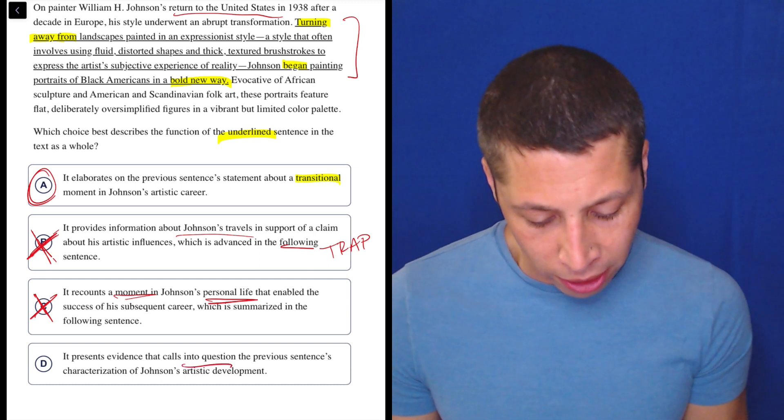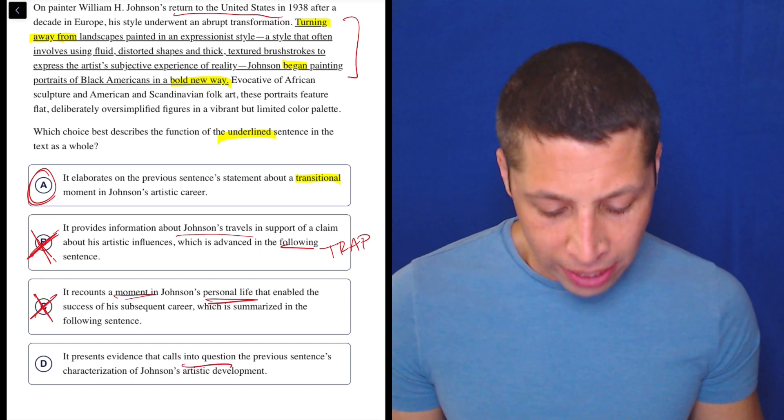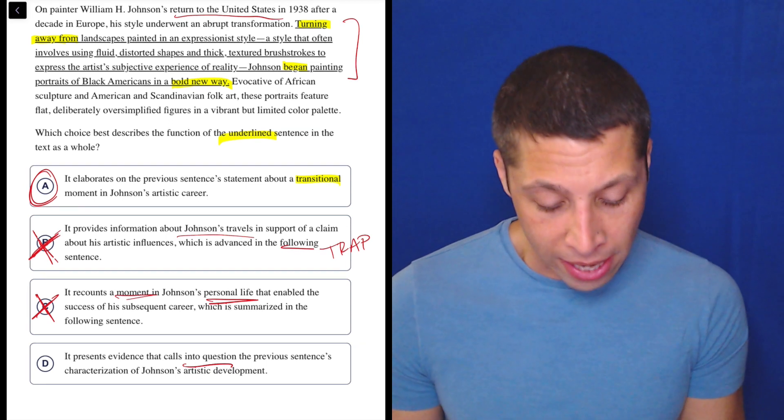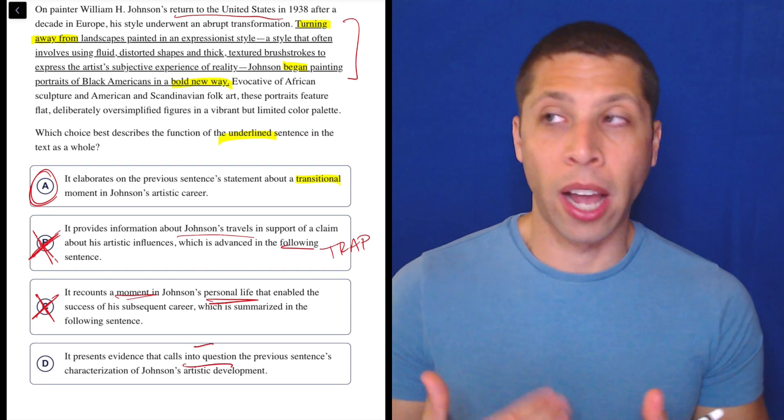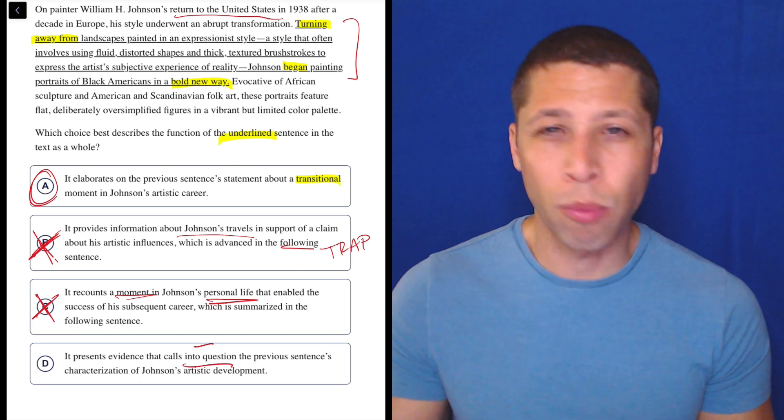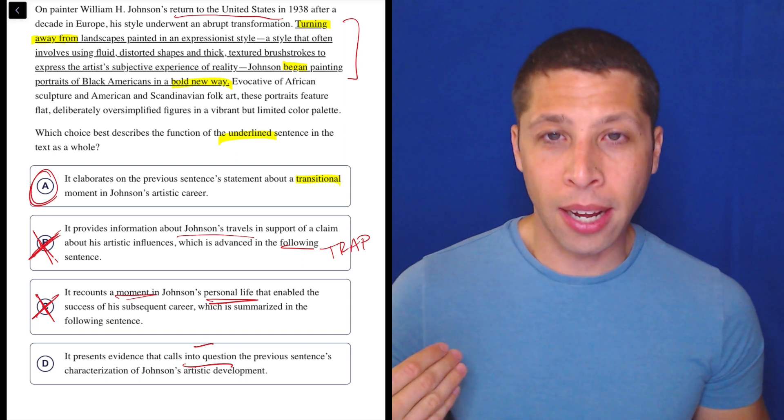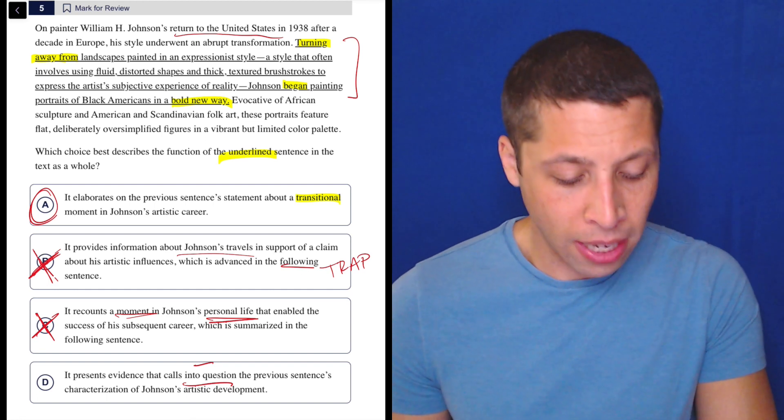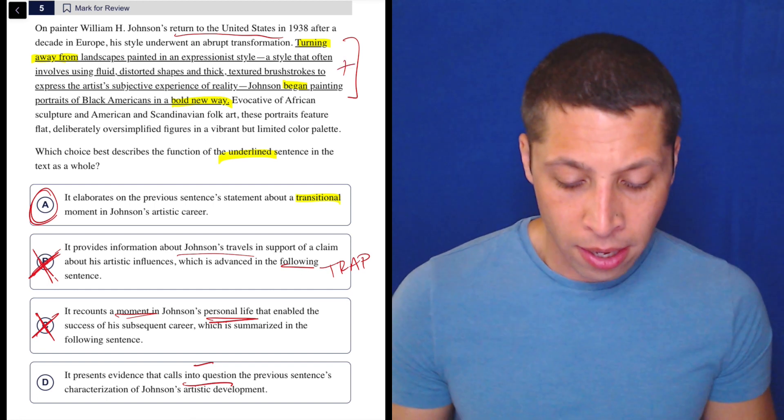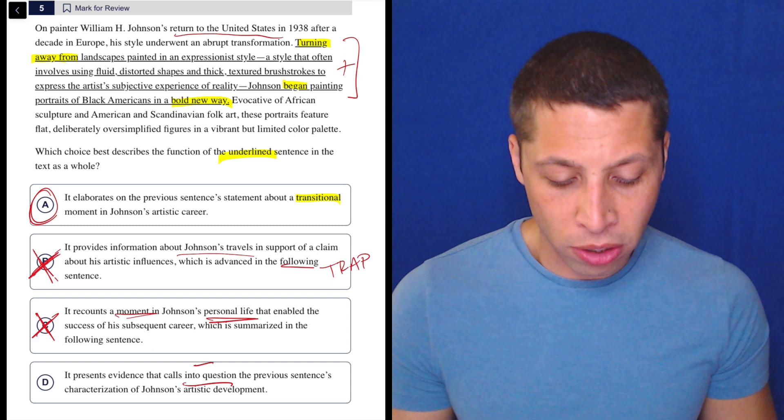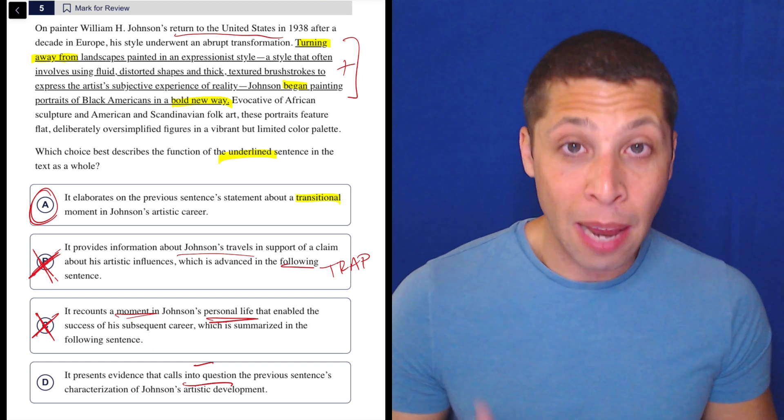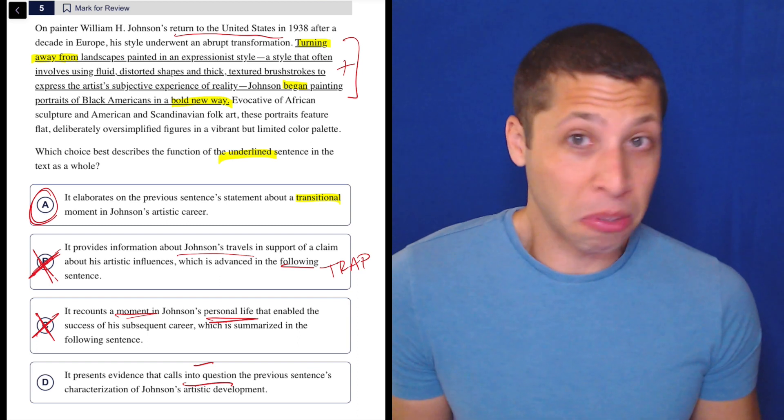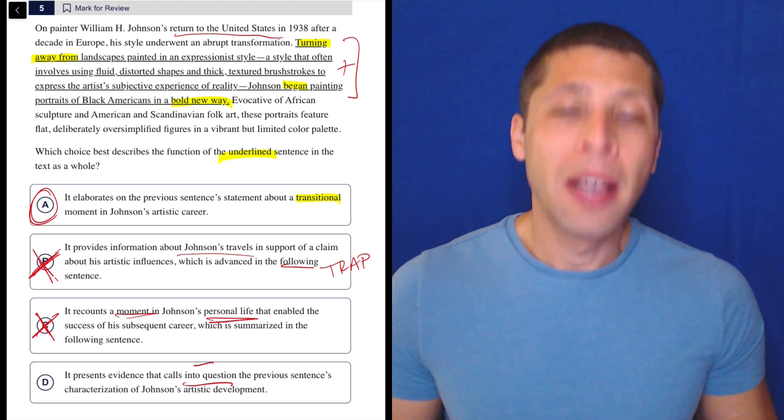D. It presents evidence that calls into question the previous sentence's characterization of Johnson's artistic development. Well, calling something into question is a very negative idea, right? It means you're kind of doubting it in some way. You're maybe saying that it's wrong or it's misleading. But I don't think that that's what's happening here, right? This doesn't seem like a negative sentence. It seems like a positive sentence, right? He's turning away from an expressionist style and began painting in a bold new way. That sounds pretty good. So just dumb summary connotations here. That seems wrong. But more than anything, I think A is just obviously correct.